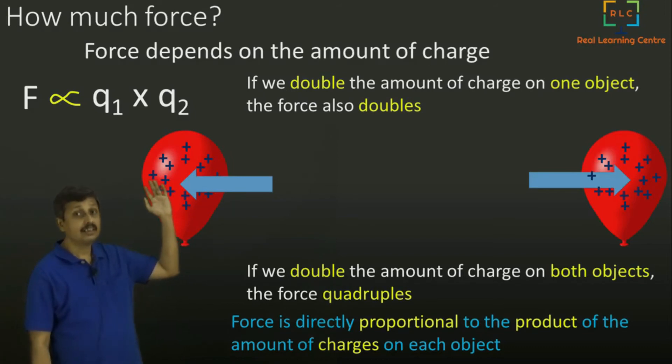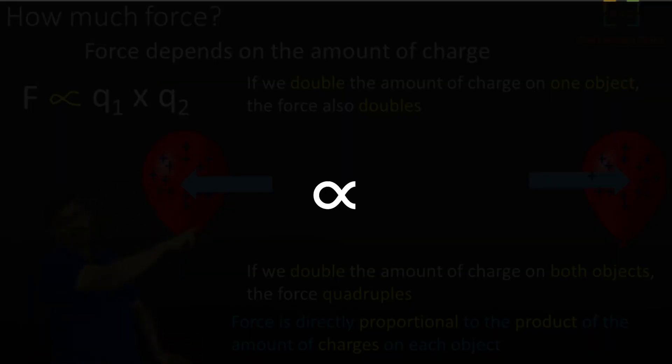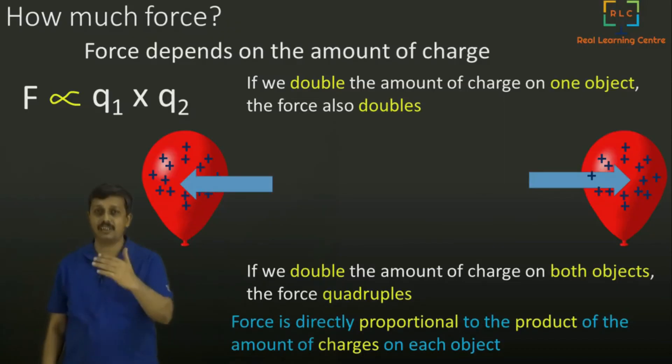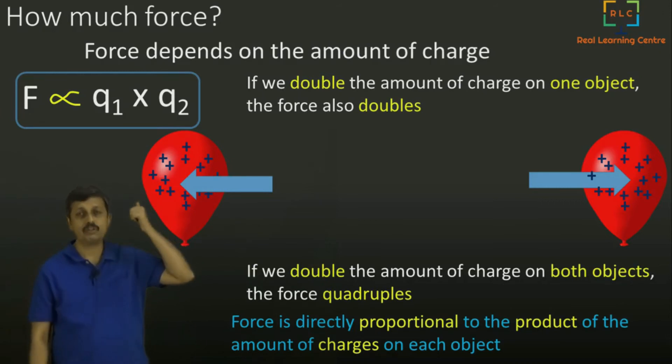And the sign that we are writing here is actually called proportional. Proportional means when the right side increases, left side also increases in the same proportion. So this is a mathematical way of writing the same statement. Now let's look at the next step. Before we move, we remember this: F is proportional to Q1 into Q2. This is required to understand the next law.